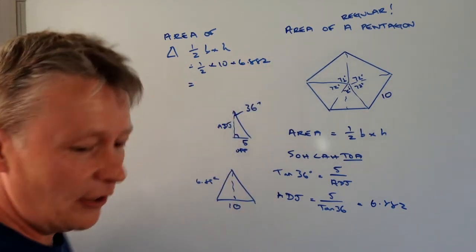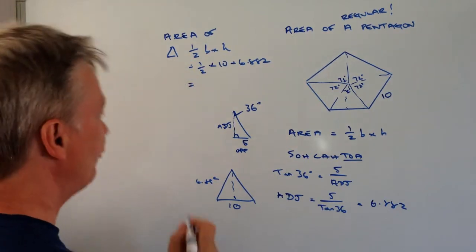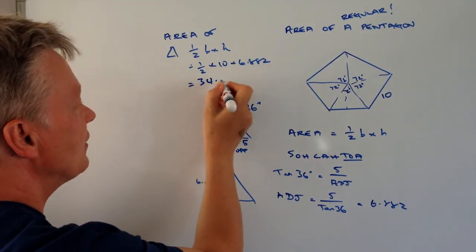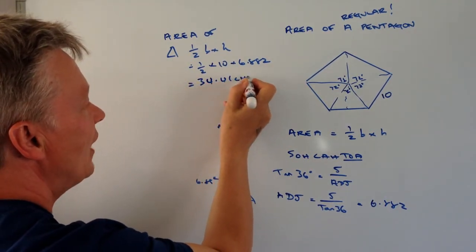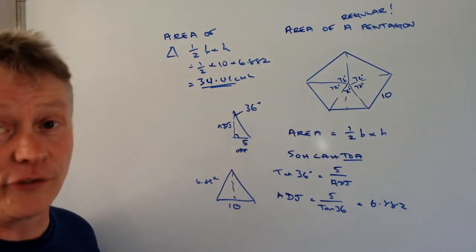Now if I put that in my calculator, I get a total area of 34.41 centimeters squared. So in other words, each one of these triangles is 34.41.